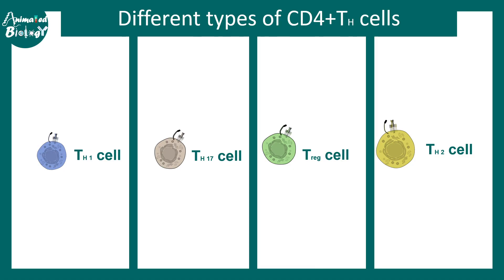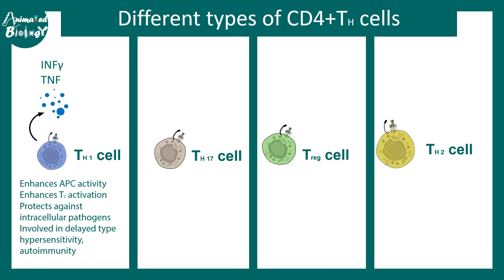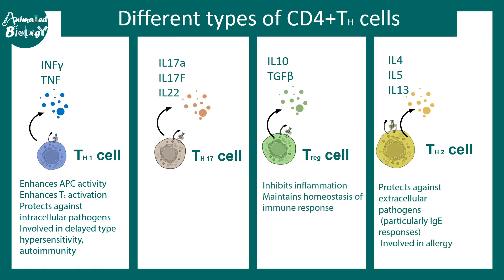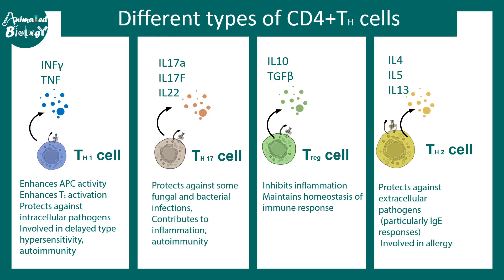Different kinds of CD4 positive T cells secrete different kinds of cytokines. For example, Th1 subtype secretes interferon-gamma and TNF. Th2 subtype secretes interleukin-4, interleukin-5, and interleukin-13. T regulatory cells secrete interleukin-10 and TGF-beta. Th17 cells secrete IL-17 and IL-22. Each of them has their own function.